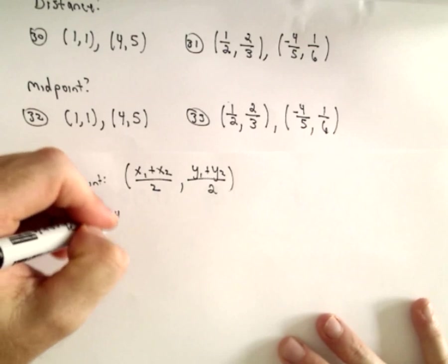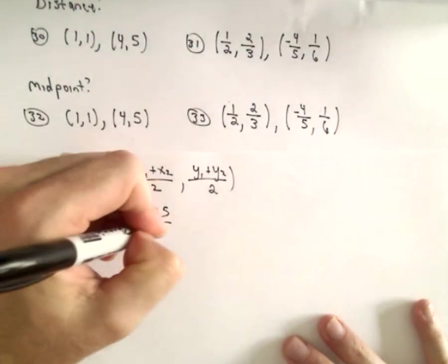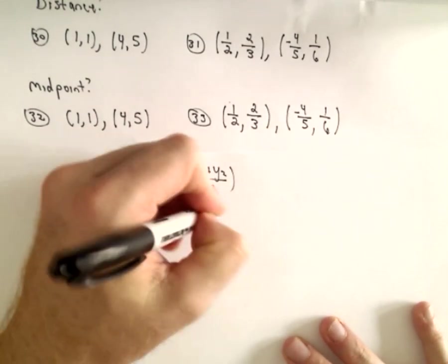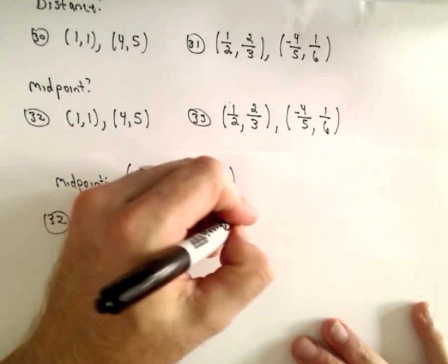So for number 32, we would have 1 plus 4, divided by 2, and then we would have 1 plus 5, divided by 2. Well, that's going to give you 5 halves. You'll have 6 over 2, which is just going to give you 3.